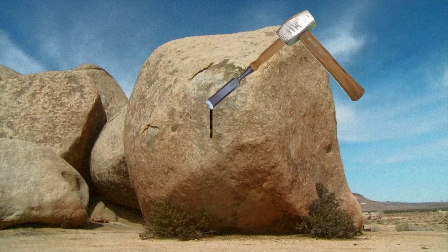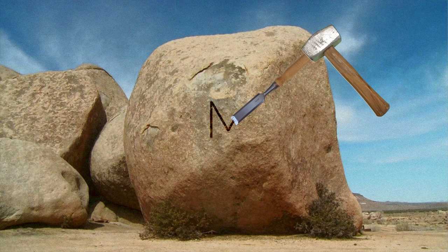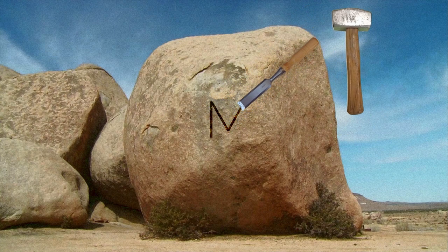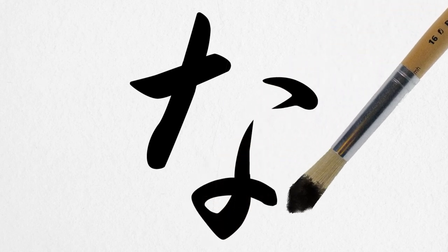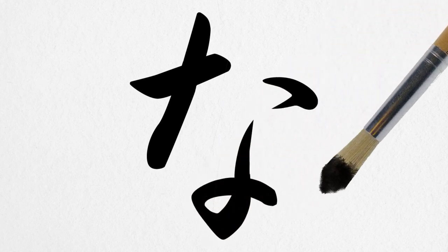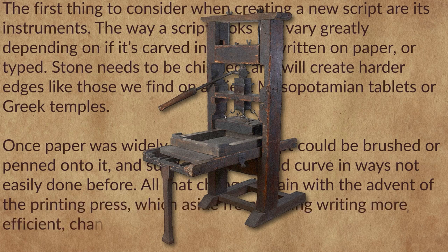Stone needs to be chiseled and will create hard edges like those we find on ancient Mesopotamian tablets or Greek temples. Once paper was widely available, though, a script could be brushed or penned onto it, and suddenly lines could curve in ways not easily done before. All that changed again with the advent of the printing press, which, aside from making writing more efficient, changed some languages permanently.